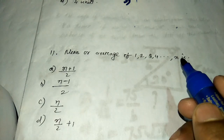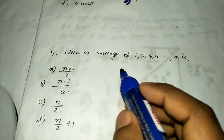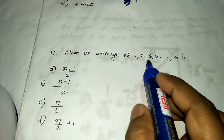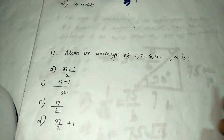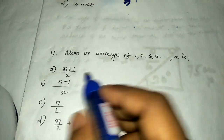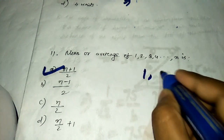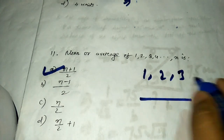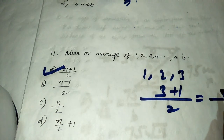Question number eleven: find the mean of the numbers 1, 2, 3, … n. We have a shortcut formula: mean = (n + 1)/2. For example, if we take 1, 2, 3 (n = 3): mean = (3 + 1)/2 = 4/2 = 2. The answer is (n + 1)/2.